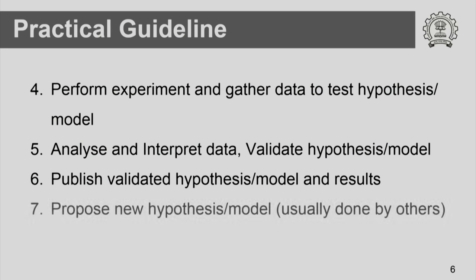Now, someone else looks at this model, its predictions, and these results. If the new hypothesis you have proposed is not able to explain some other observations, then this new group proposes a new model or hypothesis and the process goes on. It is important to look at the literature, find what has already been done, and if you are not satisfied with existing explanations, come up with a new hypothesis. Device tests to validate your hypothesis and then, most importantly, communicate your results and subject them to peer review. Let the experts in the field comment on your results and explanations.